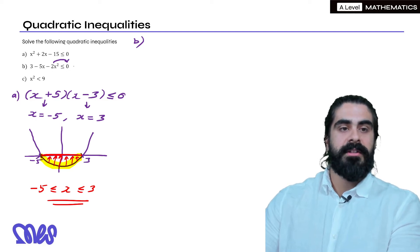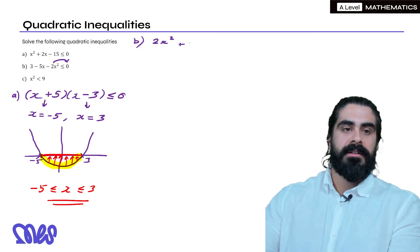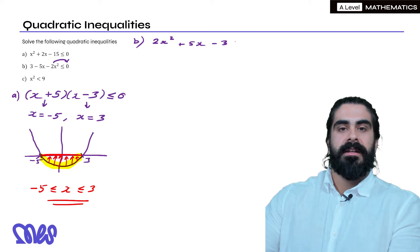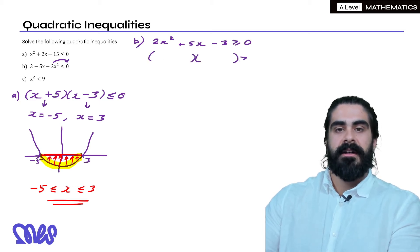So when we move all of these terms to the other side we get 2x squared plus 5x and then minus 3 is bigger than or equal to 0. And then we go ahead and solve.